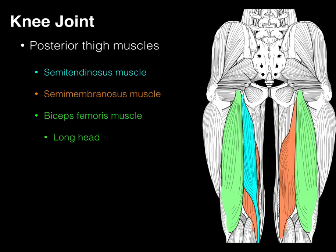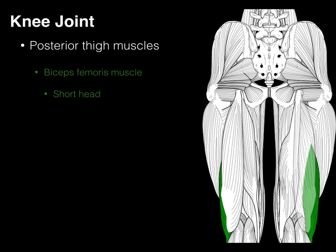So there are our posterior thigh muscles: semitendinosus, semimembranosus, and biceps femoris — those are the long head — whereas the short head, as mentioned, is not really a hamstring muscle.